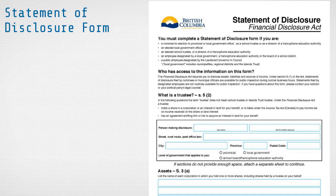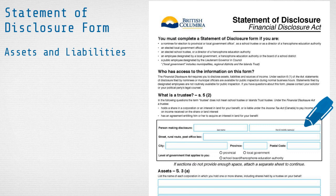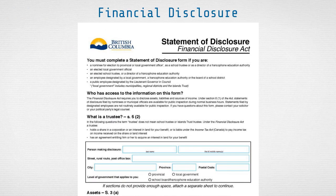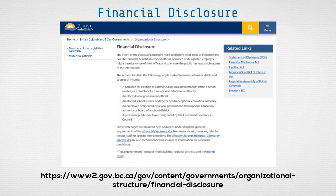A statement of disclosure form listing your assets and liabilities at the time of nomination must be completed and submitted as part of the nomination package. Nomination documents are public records, and the public can request to see them and check for accuracy. These forms are required under the Financial Disclosure Act. For more information, please go to the webpage below.